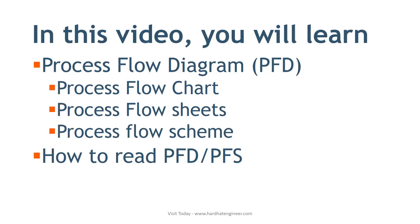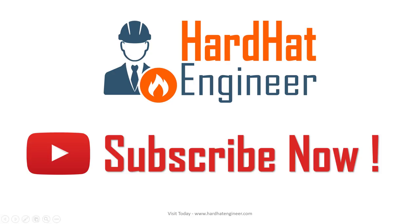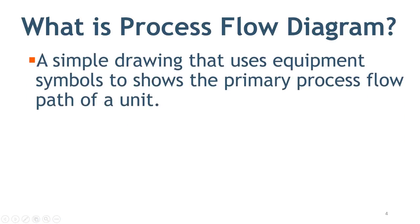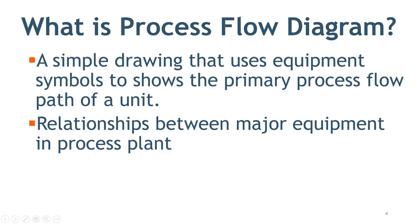Please subscribe to my channel because it helps me increase my reach on YouTube and you'll also get regular updates on new videos. Process flow diagram is a simple drawing that shows the relationship between major equipment in a process plant using equipment symbols and shows the primary process flow path of a unit. You can visualize the flow of material within the plant with the help of this drawing.